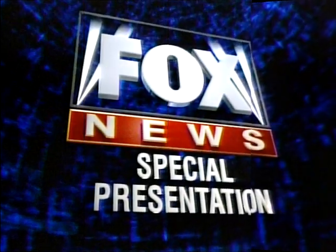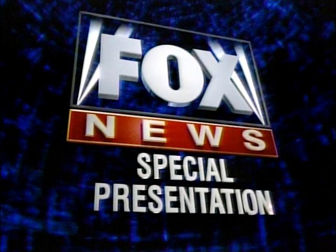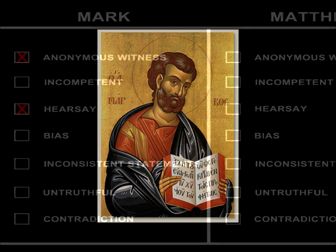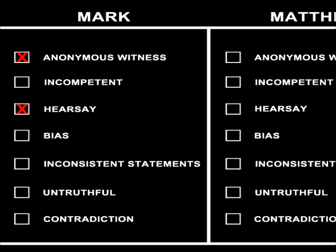If a witness has something to gain by giving their testimony, they are said to be biased, and this is sufficient to disallow their testimony. The author of Mark, almost certainly a Christian, clearly has something to gain by writing his Gospel. One of his goals was not just to tell what happened as an impartial witness, but to propagate his particular views, to spread Christianity, and to vilify the Jewish leaders of the recent past. Our witness, whoever he was, is clearly biased, such that he has a motivation to fudge the facts in order to paint Christianity in a more positive light. We'll check the bias box and move on.